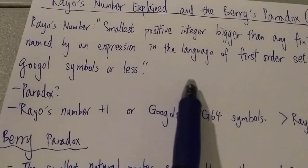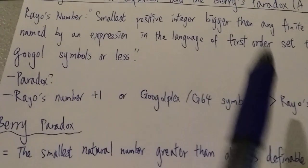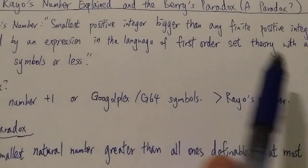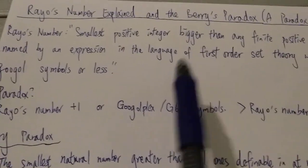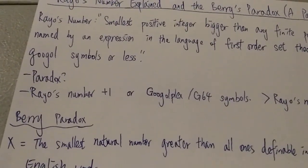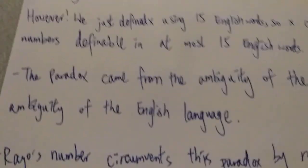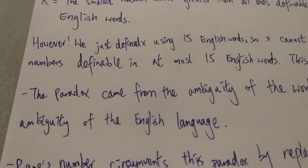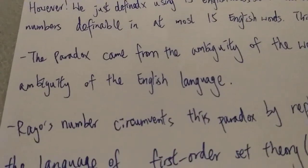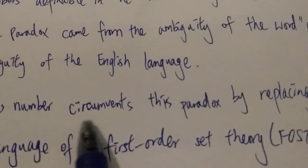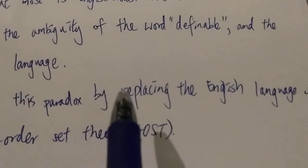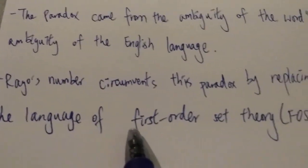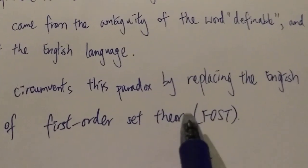Some people say this definition is obviously less than a googol symbols, so you can just easily define, change the definition slightly and you can already get a greater number than Rayo's number. However, actually Rayo's number is not a paradox.